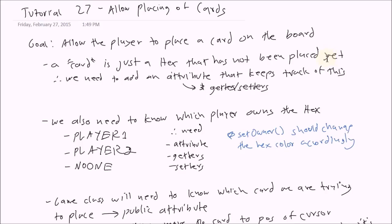We need to keep track of whether a hex has been placed or not. If it has been placed, then it is a hex. But if it has not been placed, then it's what we call a card — it's just a naming convention. So we need to keep track of that, and we also need getters and setters to know whether a card is placed or not.